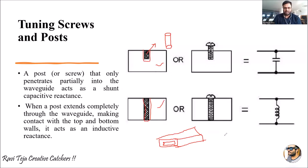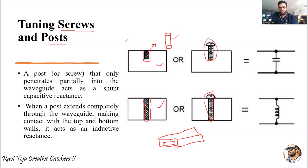This particular pipe-like structure is called a post, and you can observe a screw in both cases which is penetrating into the waveguide. These screws are considered as tuning screws. Both posts and screws are penetrated into the waveguide, based on which we get some reactance — one is inductive reactance and another is capacitive reactance.